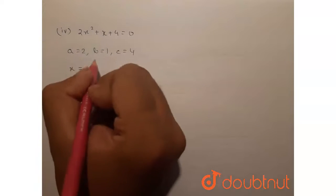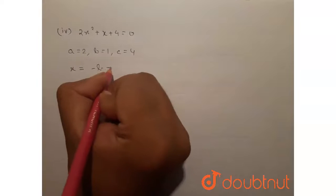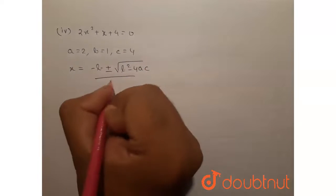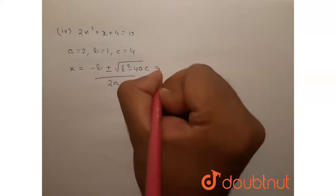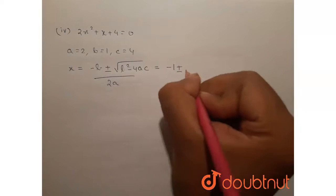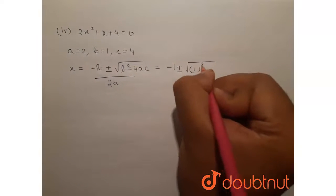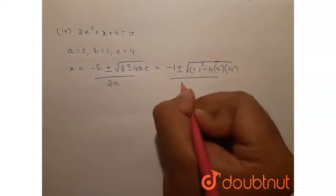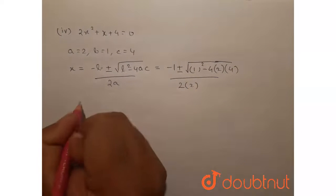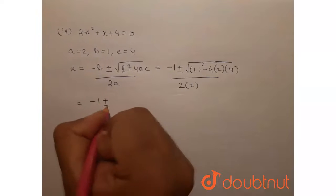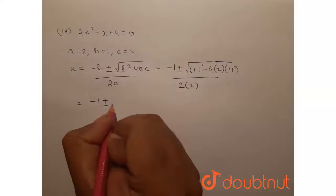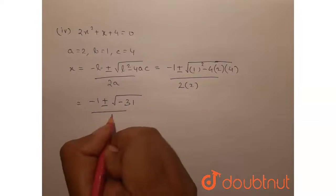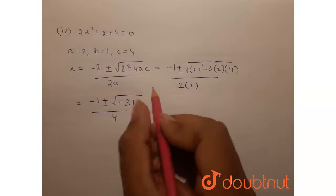Therefore, the roots of this given equation are minus b plus or minus root of b squared minus 4ac, all by 2a. That equals minus 1 plus or minus root of 1 squared minus 4 into 2 into 4, all by 2 into 2. This becomes minus 1 plus or minus root of minus 31, all over 4. So the discriminant is negative.